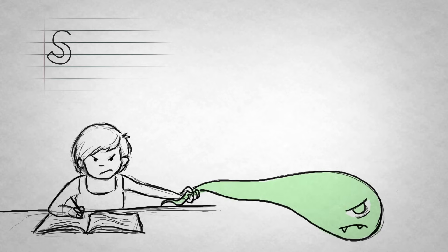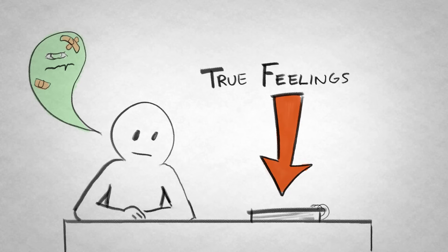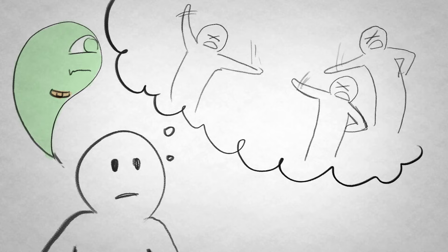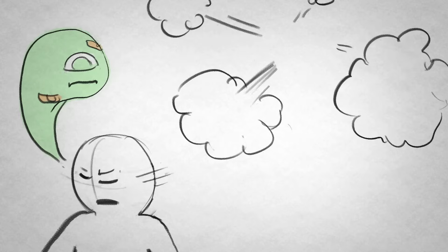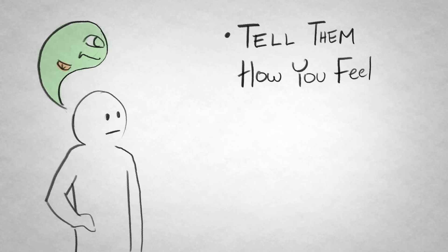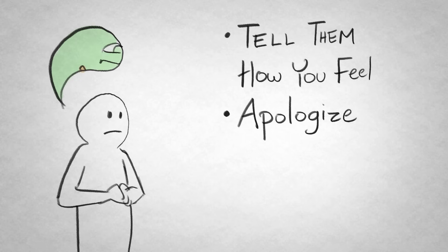Step two: communicate. Now that all of your embarrassing thoughts are out on paper, go get the real story. Don't have an imaginary argument with your friends in your head—it's only going to make things worse. Tell them how you feel about what happened. Be vulnerable and apologize to them if you overreacted in any way, because you might have.